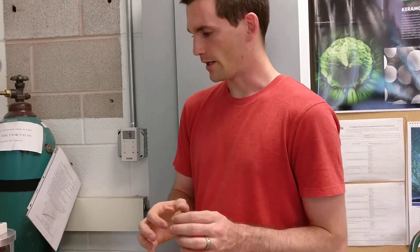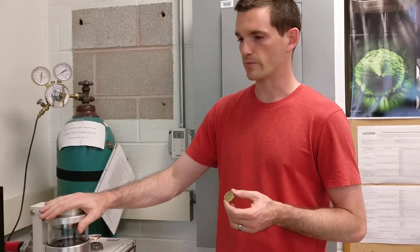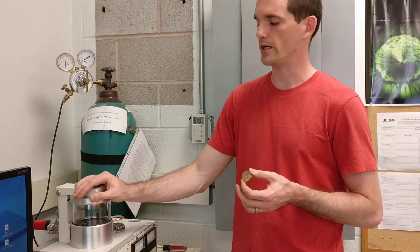We're going to sputter coat our sample. Sputter coating is basically a thin film deposition of metal. Our sputter coater has a gold palladium alloy in it.